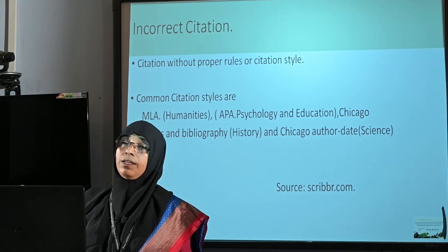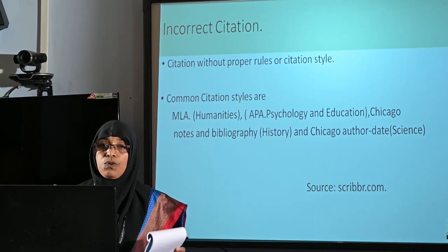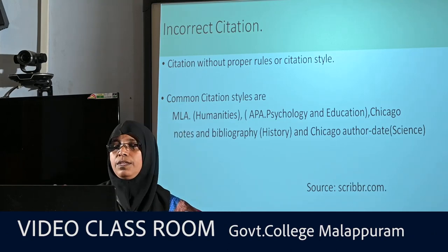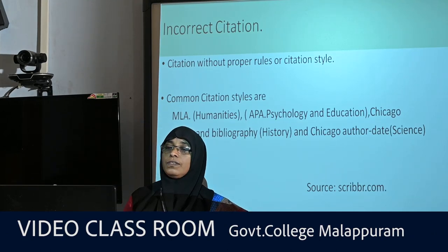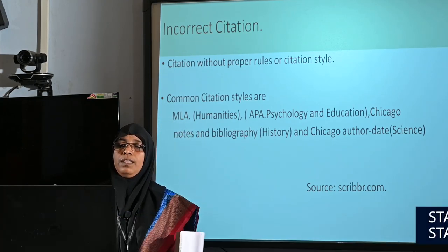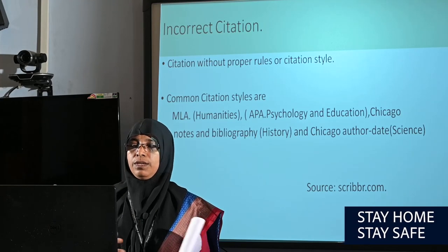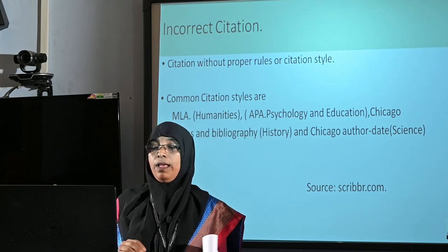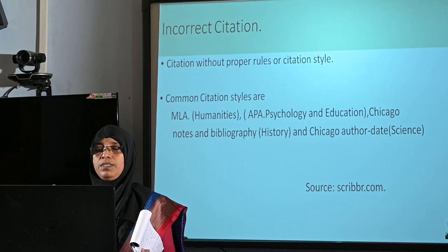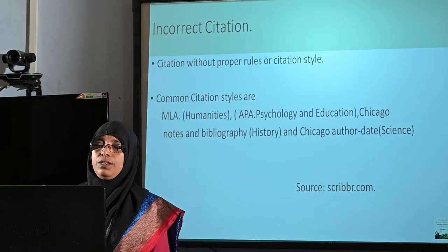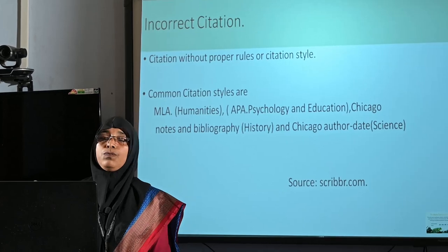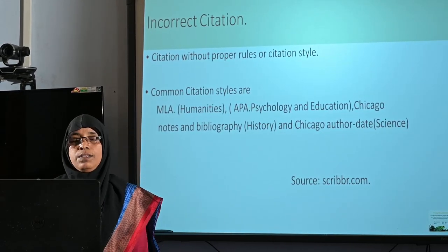In research methodology, there are strict rules for citation and you must follow one of the established citation styles. Commonly used styles include: MLA (Modern Language Association), mostly used in humanities and foreign language subjects; APA (American Psychological Association), mainly used in psychology and education; Chicago Notes and Bibliography, mainly used in history subjects; and Chicago Author-Date, mainly used in science subjects.